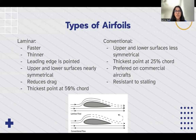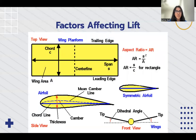Conventional airfoils have the upper and lower surfaces less symmetrical and the thickest point is at the 25% chord. These are preferred on commercial aircraft and are also resistant to stalling. Along with the airfoil, there are many other factors affecting lift — for example, the tilt of the wings, the thickness of the chord, and the overall aircraft itself.